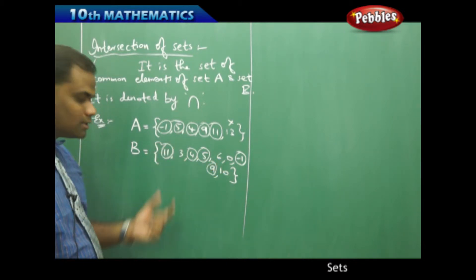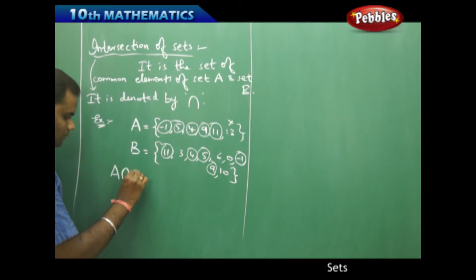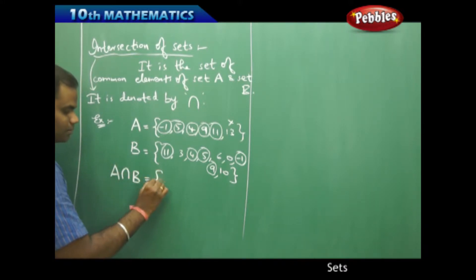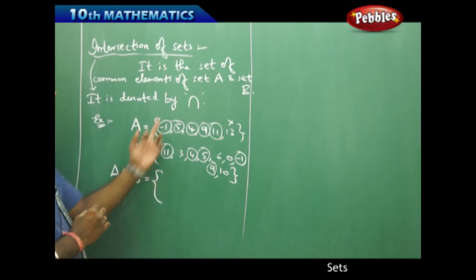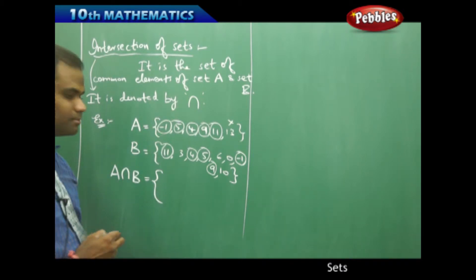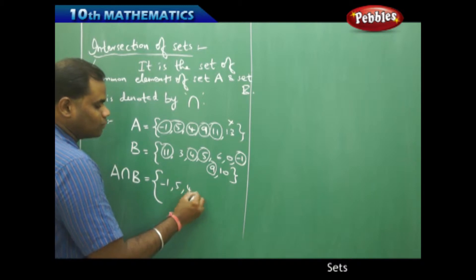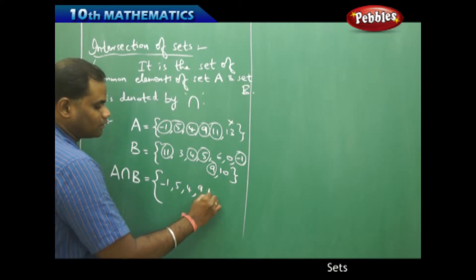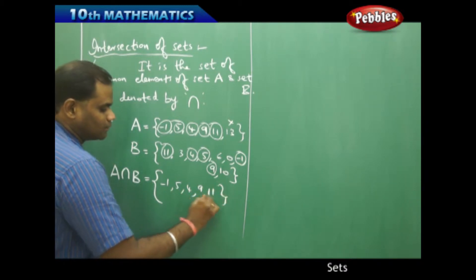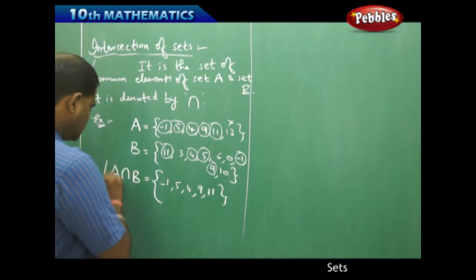These common elements, when written in set form, is A intersection B. It is denoted with the intersection symbol. So A intersection B = {-1, 5, 4, 9, 11} is the intersection of the two sets.